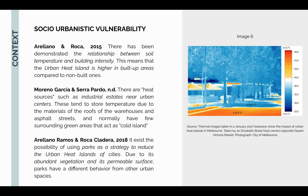Then we have the socio-urbanistic vulnerability. It has been demonstrated that there is a relationship between soil temperature and building intensity, meaning the urban heat island is higher in built-up areas compared to non-built ones, as we can see on the picture on the right. There are heat sources such as industrial estates and new urban centers which also collect more temperatures. It also exceeds the possibility of using parks as a strategy to reduce the urban heat islands of cities.